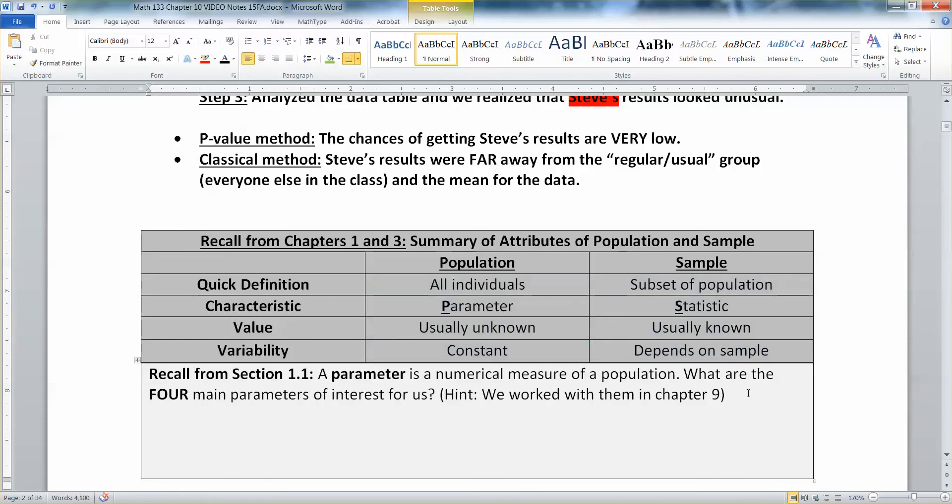Now, the four parameters that we can test, and they should look very familiar to you because they're the same ones we worked with in chapter nine, are the population proportion, which is what we were doing here, which is p, the mean, which is mu, the variance, and the standard deviation. And the variance and standard deviation, just like in chapter nine, kind of go hand in hand because one is just the other one squared. So those are the four parameters that we are going to be testing in chapter 10 and chapter 11, quite frankly, and 12 to some extent as well, but 12 and 13 are going to get a little trickier on us.